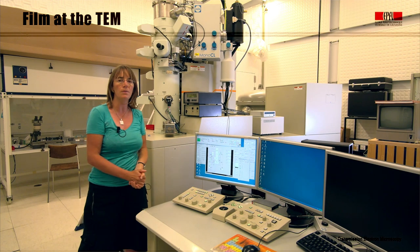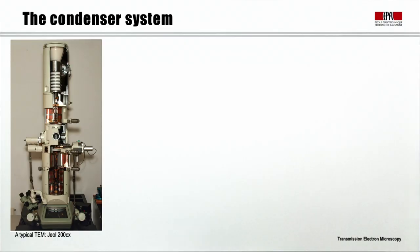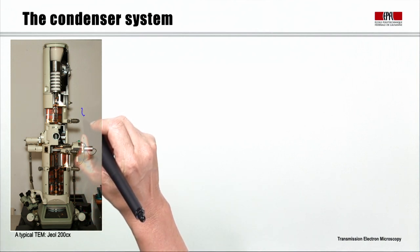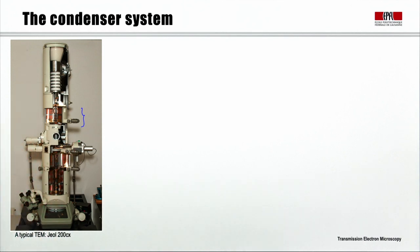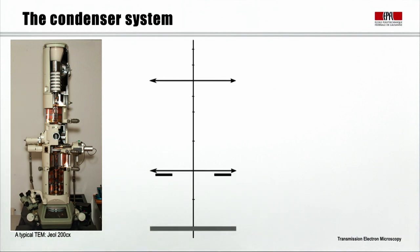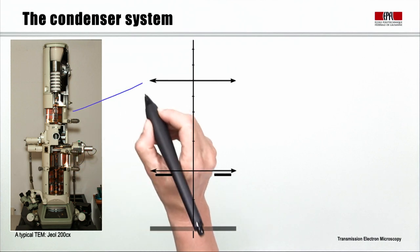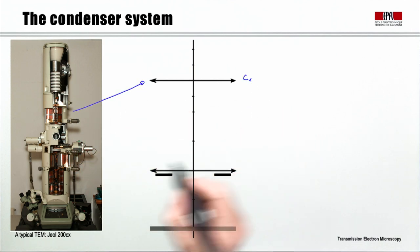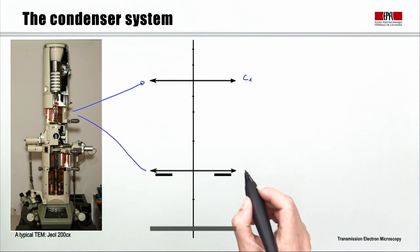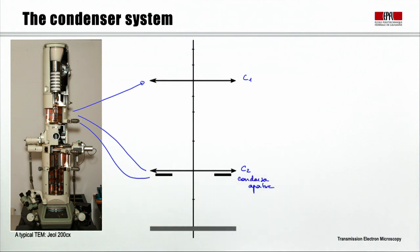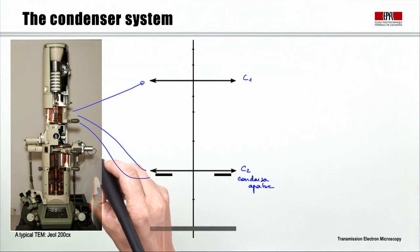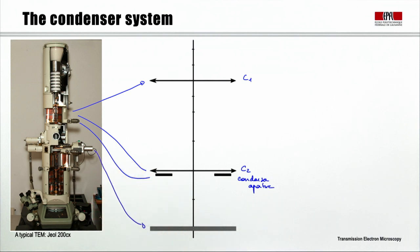The condenser system forms the beam after the gun and projects it on the specimen. It is the first set of lenses before the specimen and after the gun, and it is made of at least two lenses and one aperture. We will start with the simplest case of two lenses and one aperture. The first one on top is called condenser 1, the second one below is condenser 2, and the aperture is the condenser 2 aperture. The specimen is further away and the beam formed by this set of lenses will be projected on it.